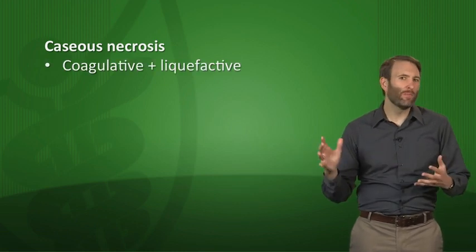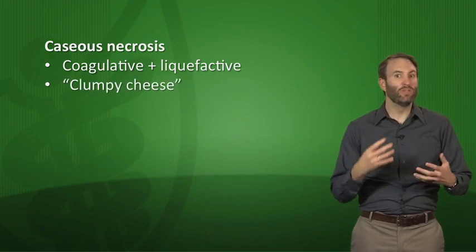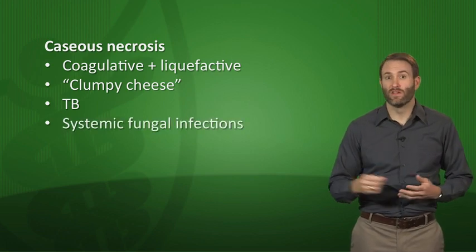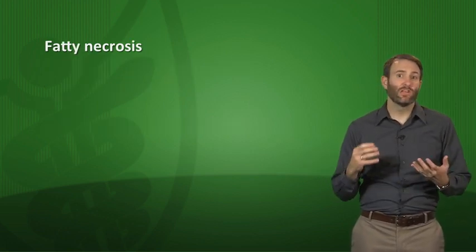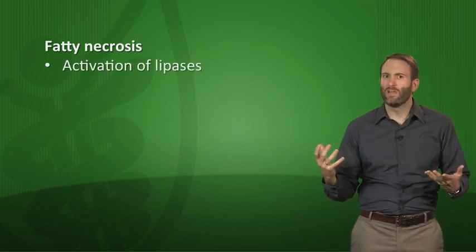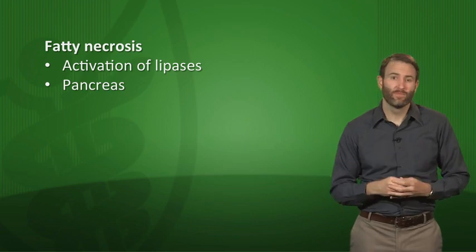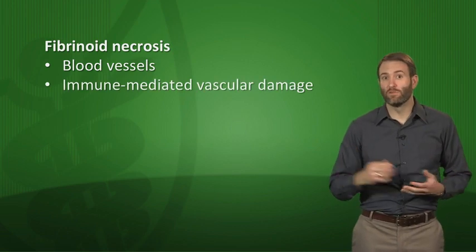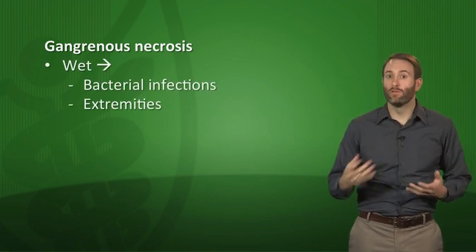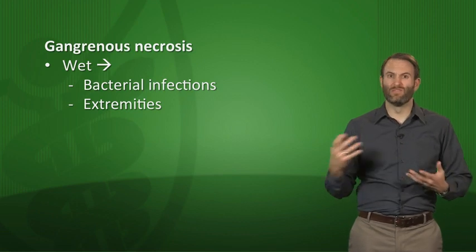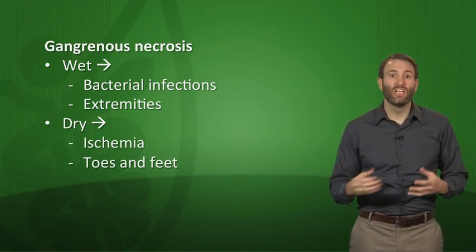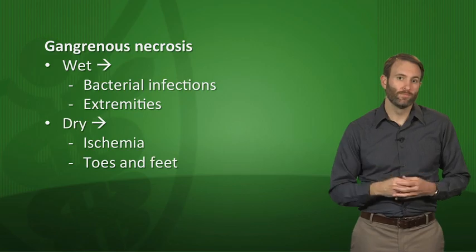Caseous necrosis is a combination of coagulative and liquefactive, looking like clumpy cheese — seen in tuberculosis and systemic fungal infections. Fatty necrosis results from activation of lipases, as seen in the pancreas. Fibrinoid necrosis is found in blood vessels and is caused most often by immune-mediated vascular damage. Gangrenous necrosis can be wet or dry: the wet version involves bacterial infections common in extremities, while the dry version is usually from ischemia such as arterial occlusion in toes and feet.